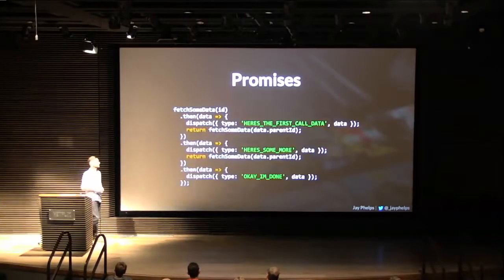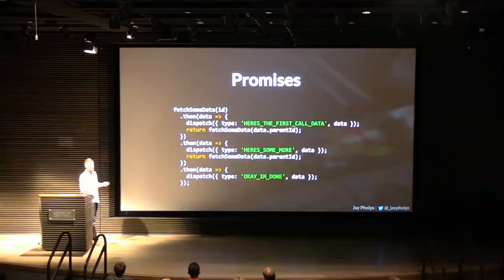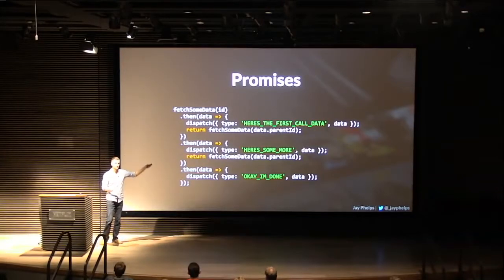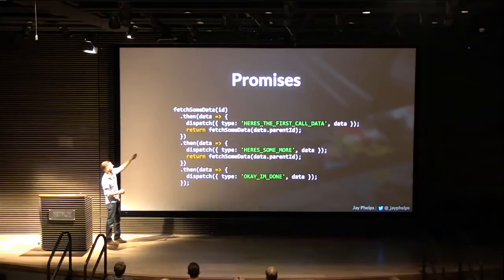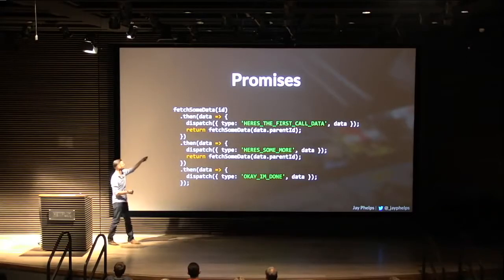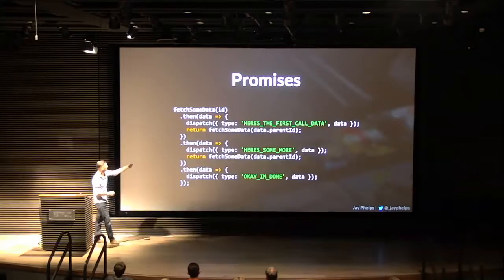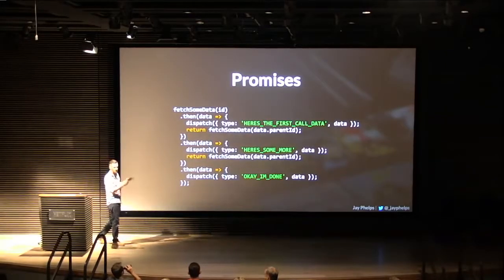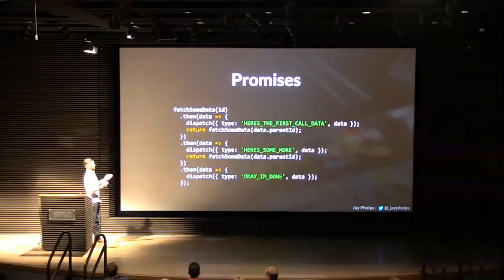Promises were created to try and resolve some of those issues. When you provide your callback to a promise, if you return yet another promise, you can chain them horizontally. Here we fetch data for a given ID, then fetch more data with the parent ID, returning that new promise — that's what lets us do horizontal-style composition. Once you understand that pattern, it's a lot easier to read.